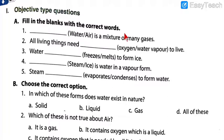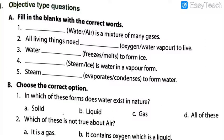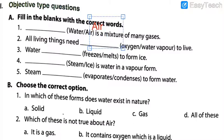Let's get started. The first question is fill in the blanks with the correct words — the options are given in brackets. First question: dash is a mixture of many gases. Options are water or air. Out of these two, which is a mixture of gases — water or air? The correct answer is air, because air is the mixture of many gases including oxygen. So air is the correct answer. I am going to write it down in the blank. I hope that you too are writing it down.